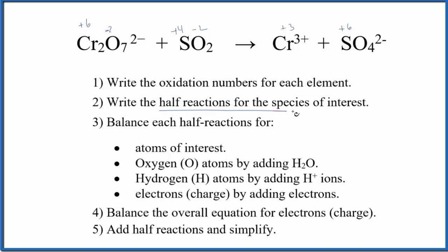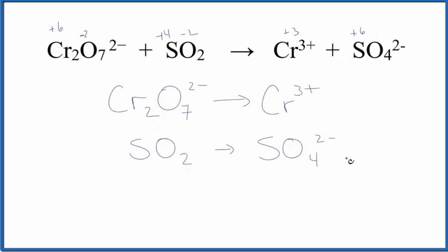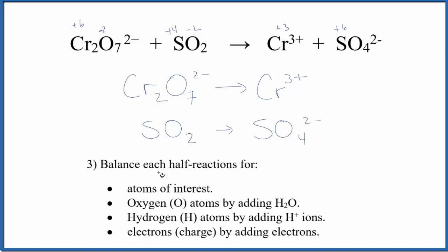Once we've done that, we can balance everything. But let's write the half reactions. So here the chromium, each chromium is plus six, and over here each chromium is plus three, so we've gained electrons. This is going to be reduced. The oxygen, that's being oxidized, and you can see it's gained oxygen, so that makes sense.